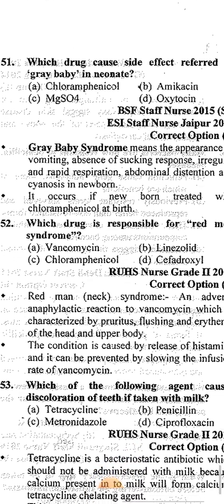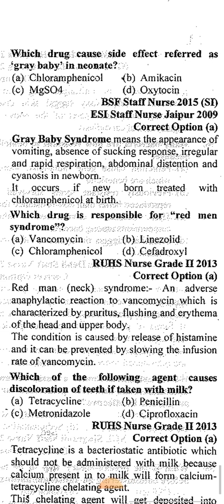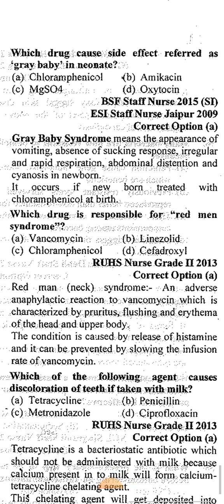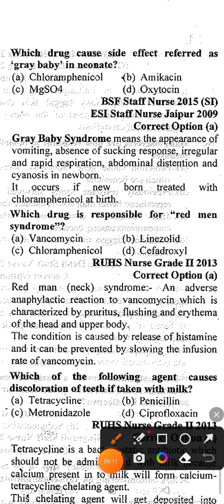The next question: which drug causes the side effect referred to as gray baby syndrome in neonates? Option A: chloramphenicol, Option B: amikacin, Option C: magnesium sulfate, Option D: oxytocin. The correct answer is option A, chloramphenicol, because gray baby syndrome involves vomiting, absence of sucking response, irregular and rapid respiration, abdominal distension, and cyanosis in newborns. It occurs if the newborn is treated with chloramphenicol at birth.